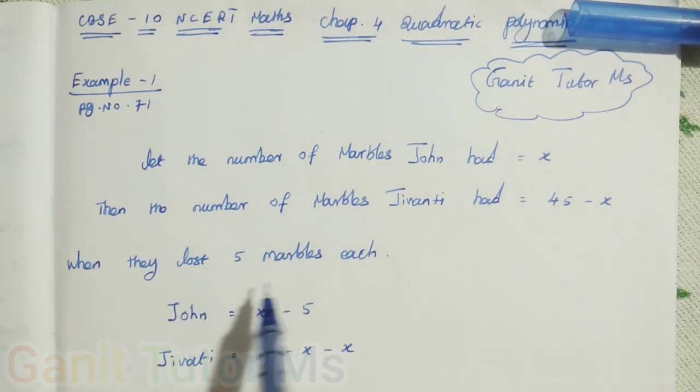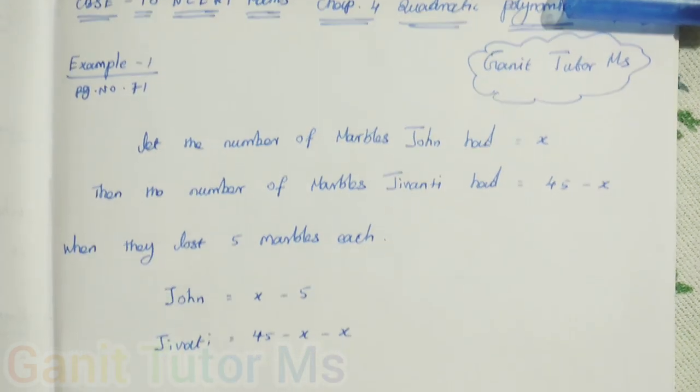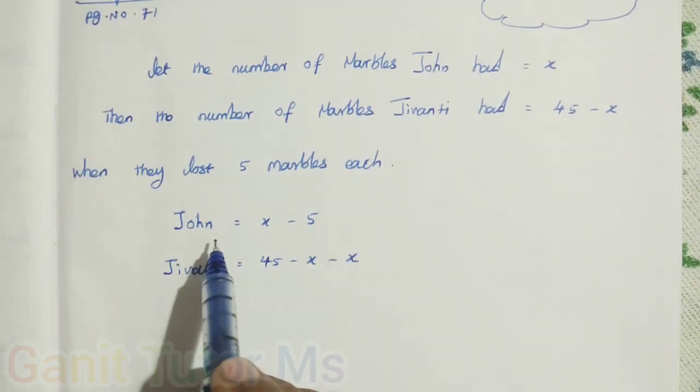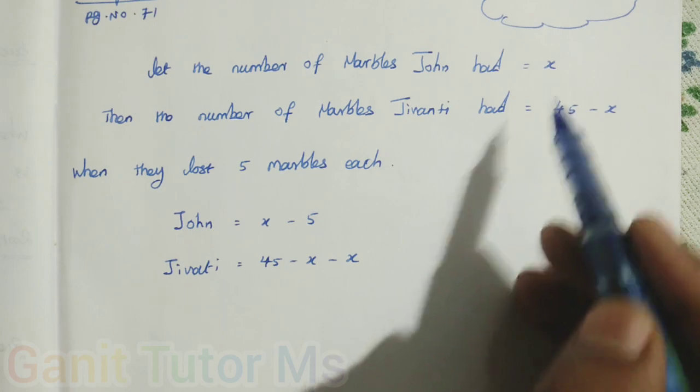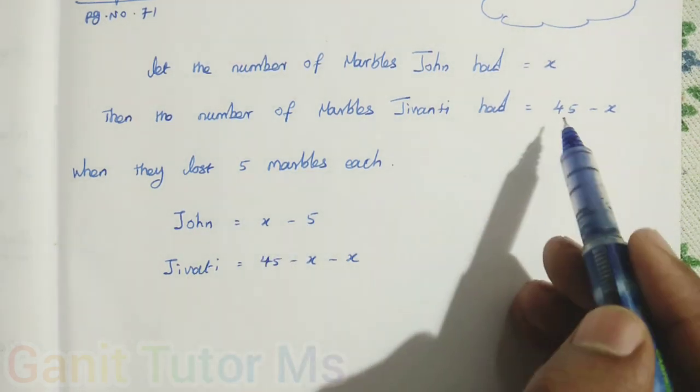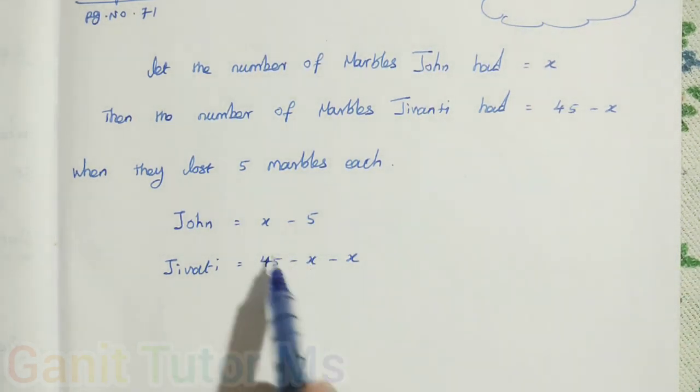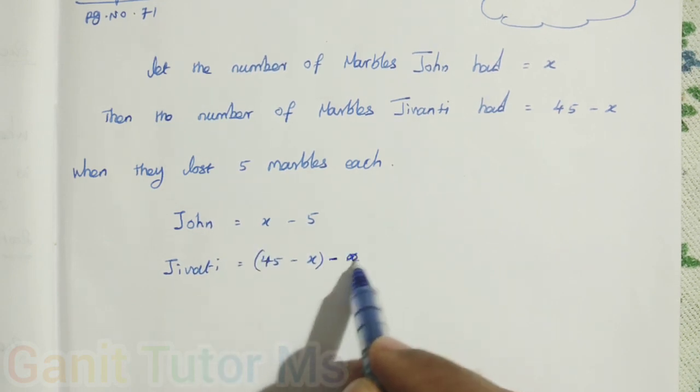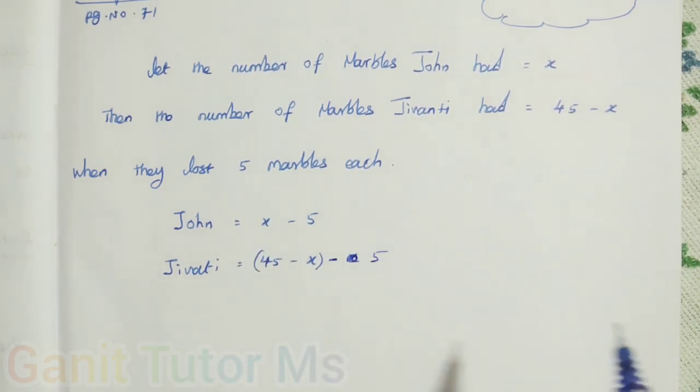When they lost 5 marbles each, both of them lost 5 marbles each. So John lost, John has x marbles, so x minus 5. Jivanti, 45 minus x. She had 45 minus x, so again she lost 5 marbles. Now you can simplify this: 45 minus x minus 5.